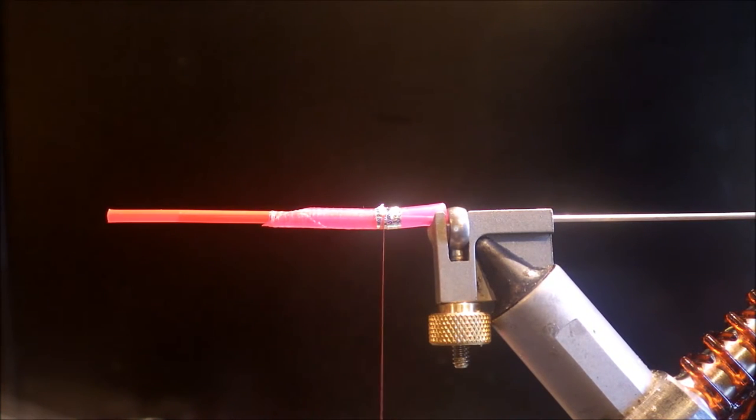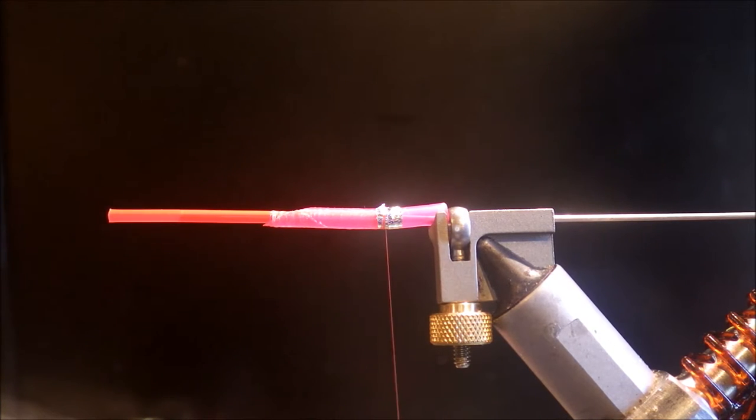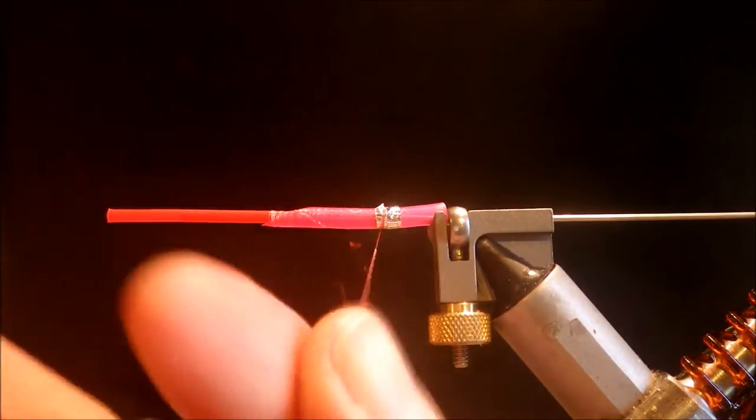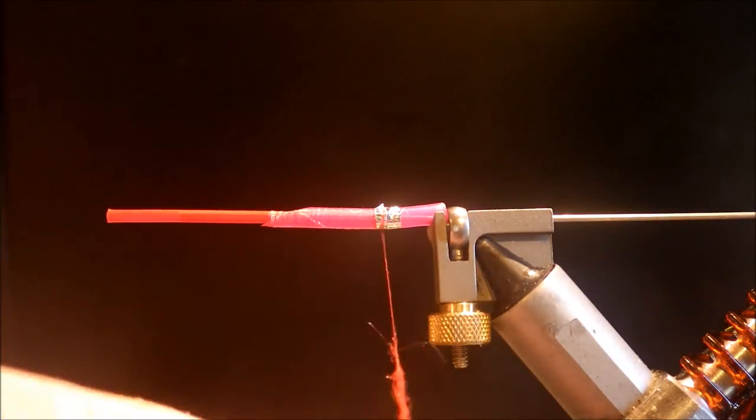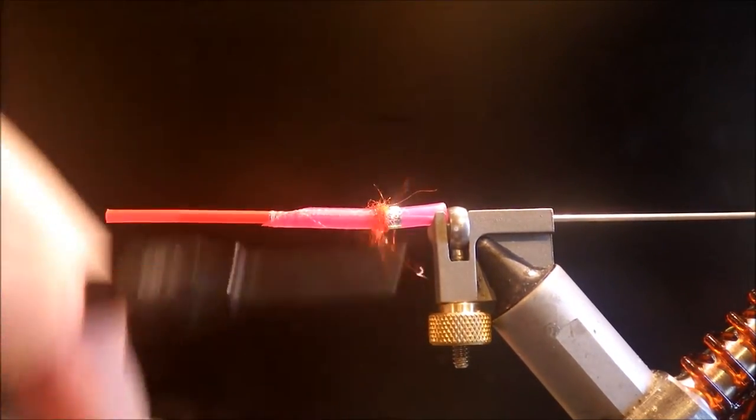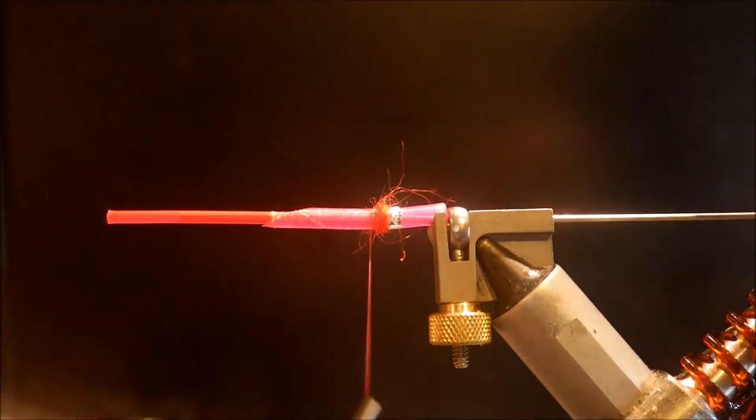Then for the butt I'm using some fluorescent red dubbing. Any old dubbing will do. This is an SLF from Subai. You don't need much, just a pinch. And then just build up your red dubbing ball there.